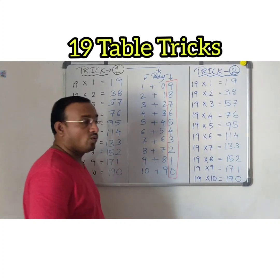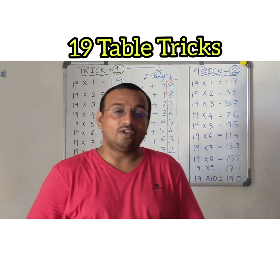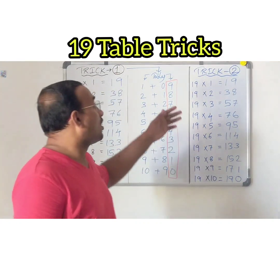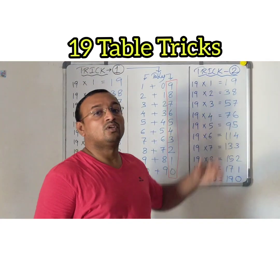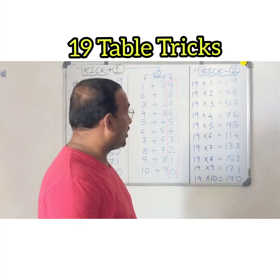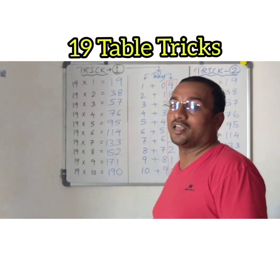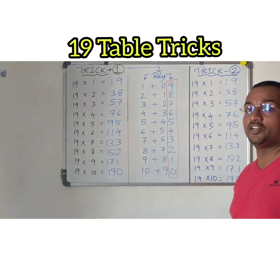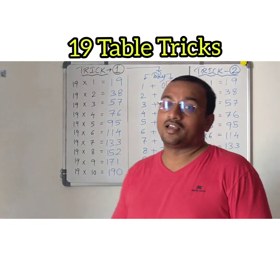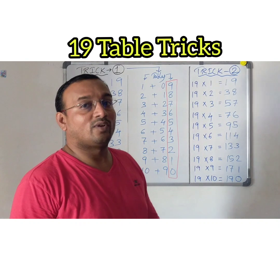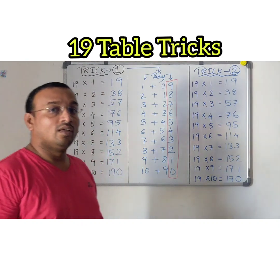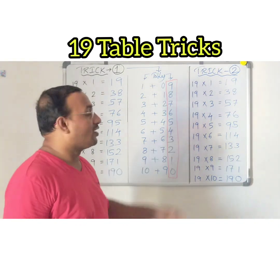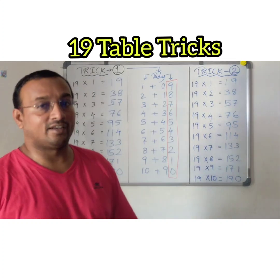In this way, we can complete the 19 table using trick 2 — using odd numbers and digits from 0 to 9. I think trick 2 is easier, and we can call it the lightning trick. Both are easy tricks, but with trick 2 you can write the table in a fraction of seconds.